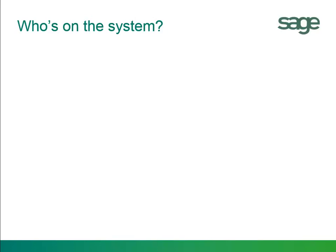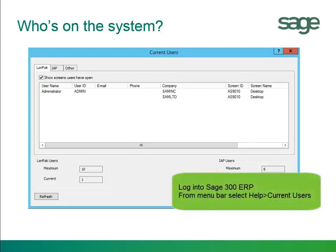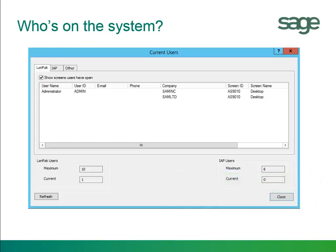Before we process a month or year-end, we want to know who's in the system. To know who's in the system, you want to make sure everyone is logged out. You want to log into Sage and select Help, then Current Users. As you can see, it shows the users that are logged in, what company they are logged in, and what session ID — which is the UI interface they currently have open. You want to make sure everybody is logged out of the system before you can do a month or year-end process.